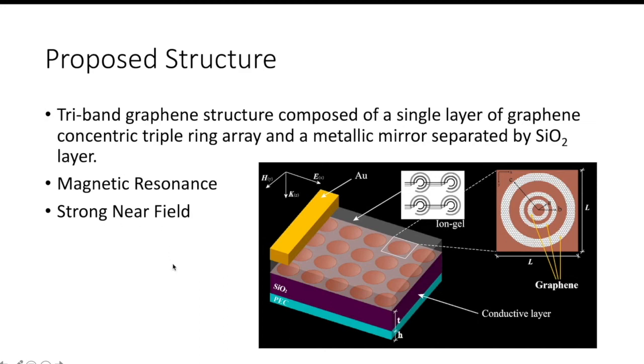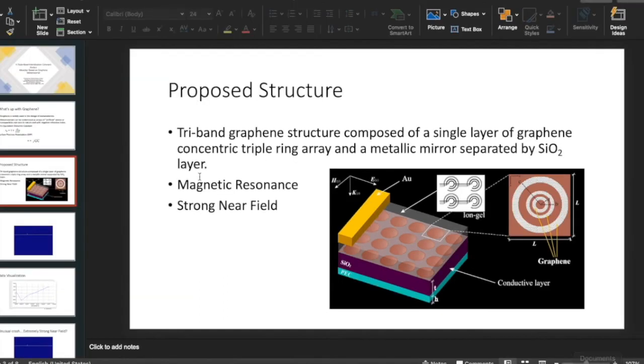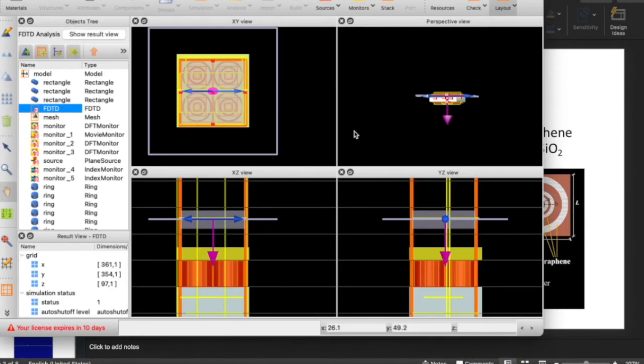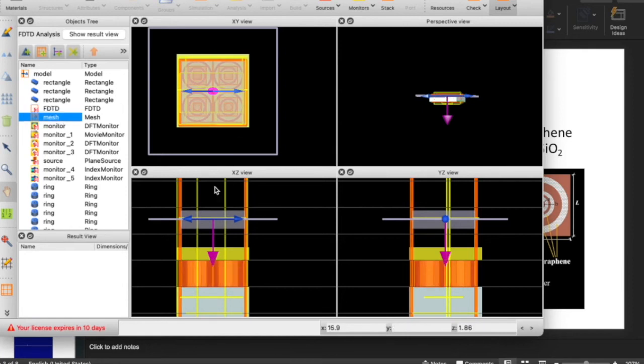It produced a crash in the simulation. Let me go to the FDTD to show you. Here is the structure with my mesh over it. I simplified it, reduced it to four rings.